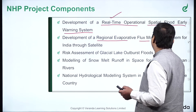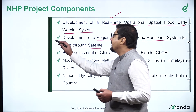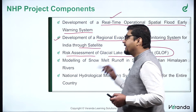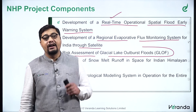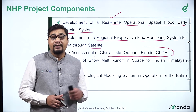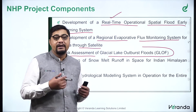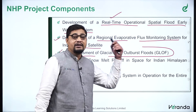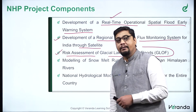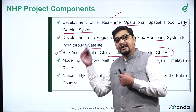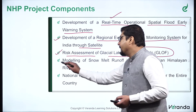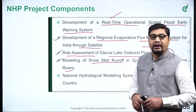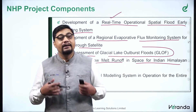Another important component is the development of a regional evaporative flux monitoring system for India through satellite. Then there is risk assessment of glacial lake outburst floods — a few years back there was a severe flood in the Ladakh region, and examples like Kedarnath show how glacial lake outbursts and flash floods can have devastating impact. Risk assessment allows disaster management and disaster mitigation strategies to be developed. Next is modeling of snow melt runoff for Indian Himalayan rivers, which is very important since the routes of Himalayan rivers change over time due to snow melt factors.